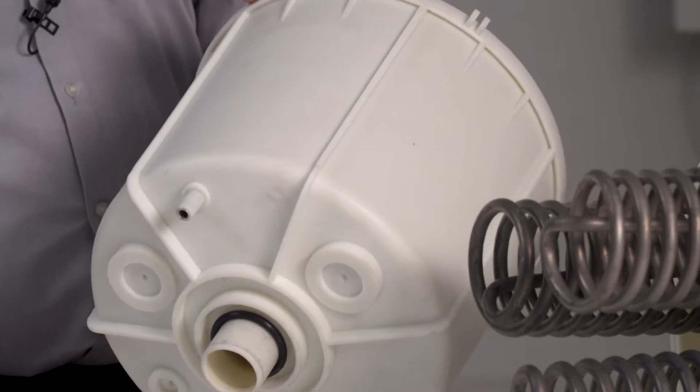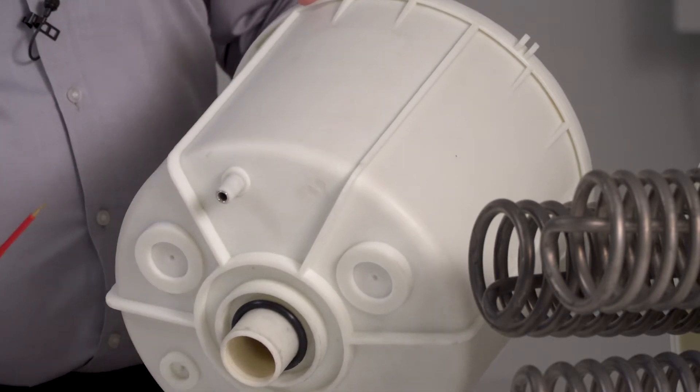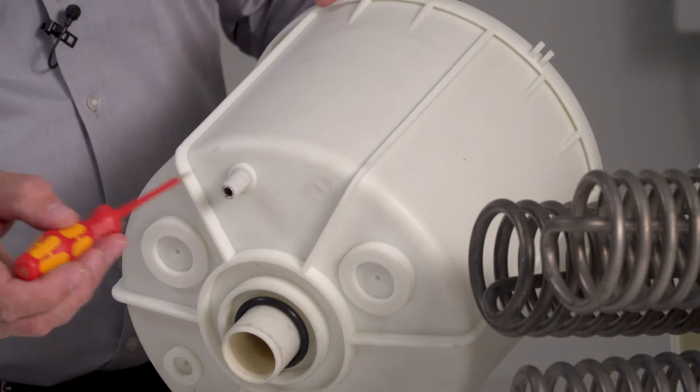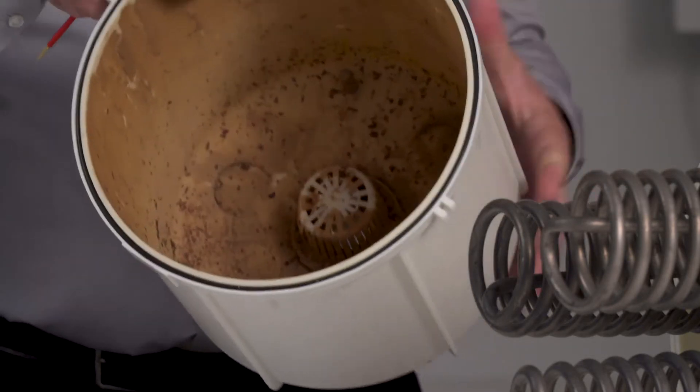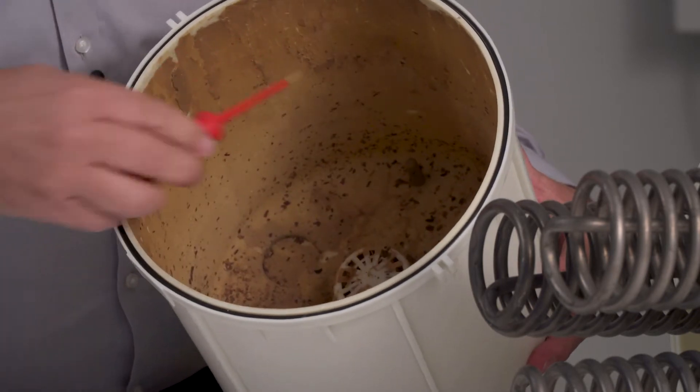Here you can see a flushing nozzle which comes fitted in the flex line and is optionally available for the standard line. This must also be kept free of residue. You can also see it here from the other side. There's a small hole for the flushing nozzle. This must also be kept clear.